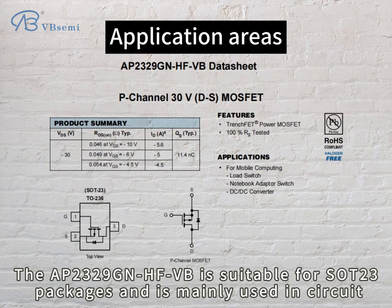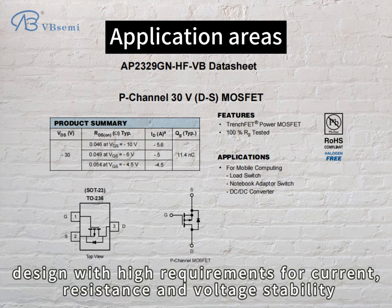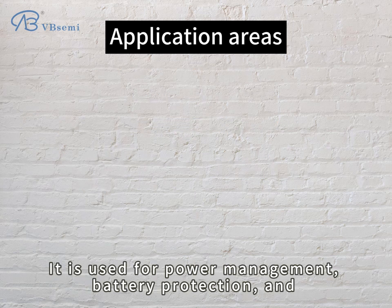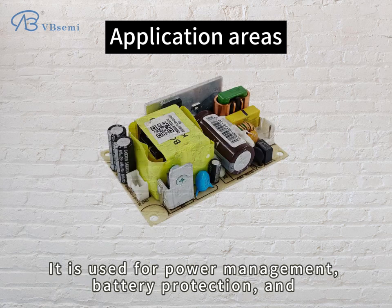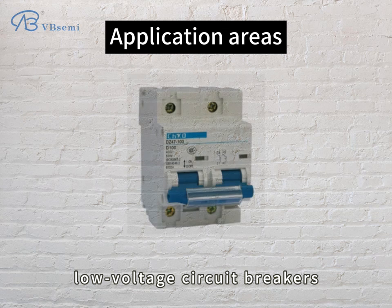The AP2329GN-HF-VB is suitable for SOT23 packages and is mainly used in circuit designs with high requirements for current, resistance, and voltage stability. It is used for power management, battery protection, and low-voltage circuit breakers.